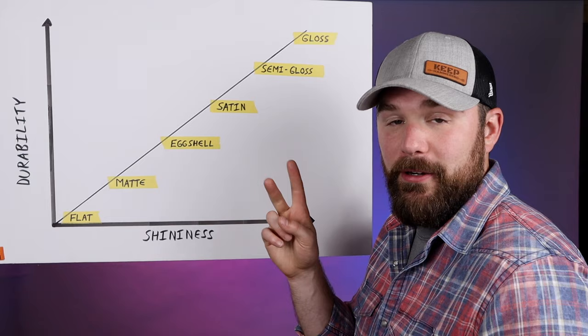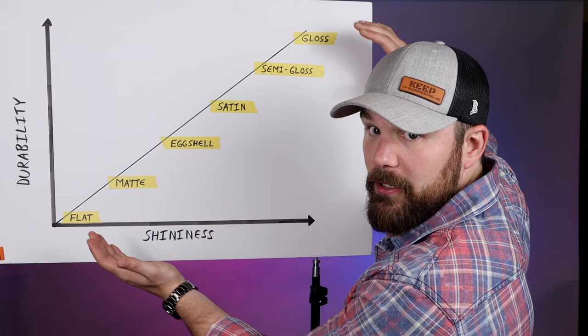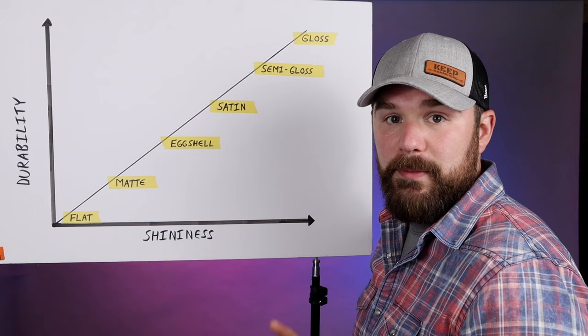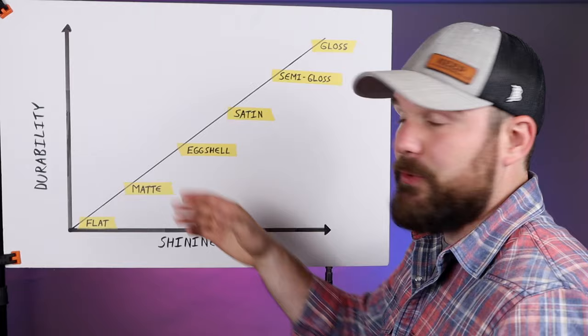First, the terms finish and sheen can be used interchangeably. They both refer to the same thing, which is the level of shine in a particular paint. These six terms here on the yellow tape are all sheens and all finishes. I picked the six most common ones, whether using paint from Sherwin-Williams, Benjamin Moore, Lowe's, or Home Depot. In general, the shinier the paint, the more durable it is, which is why I have this chart laid out the way that I do.